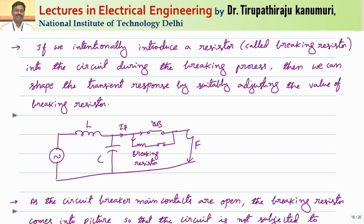As some current is bypassed, the current passing through the circuit breaker decreases, which automatically speeds up the deionization process. Because the deionization process speeds up, the resistance between the circuit breaker contacts increases. Consequently, more current bypasses through the breaker resistance. This is a cumulative process: after some time, no current passes through the circuit breaker because the dielectric strength of the material has cumulatively increased, and the entire current is bypassed through the breaking resistor.